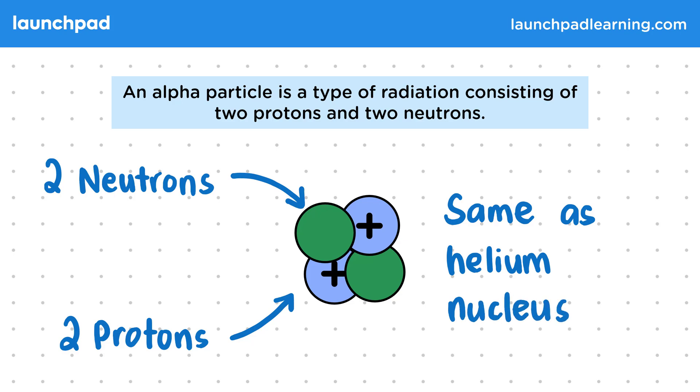It's an atom with an atomic number of 2 and a mass number of 4, just without any electrons. But where do these particles come from?